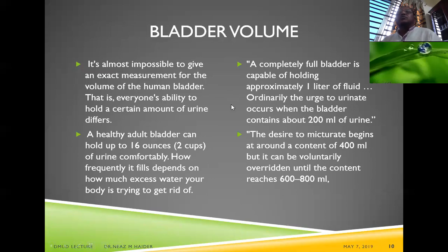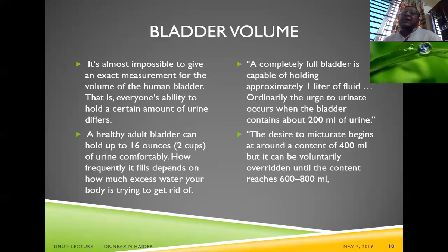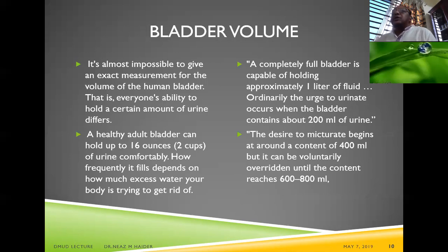Regarding bladder volume, it is almost impossible to give an exact measurement for every person's capacity. A healthy adult bladder can hold up to 16 ounces — about two cups of urine — comfortably, with a completely full bladder capable of holding approximately one liter. The urge to urinate occurs at about 200 ml, the desire to micturate begins around 400 ml, and it can be voluntarily overridden until 600–800 ml.